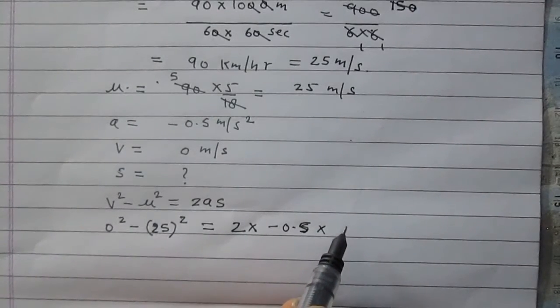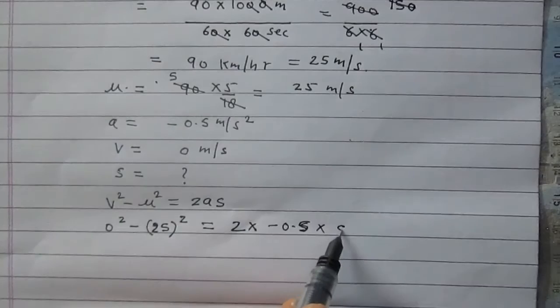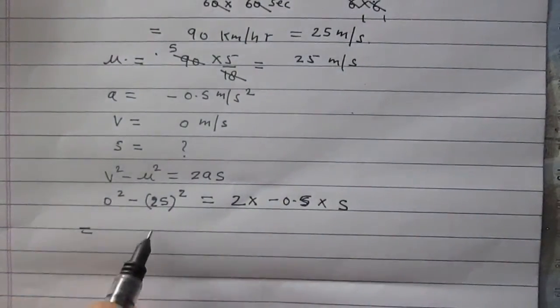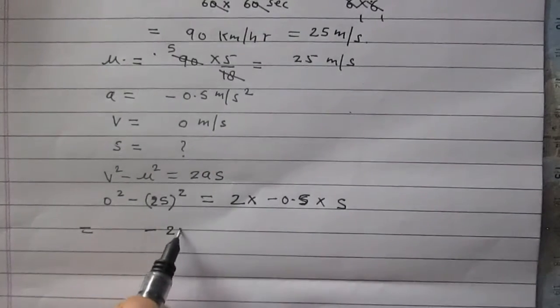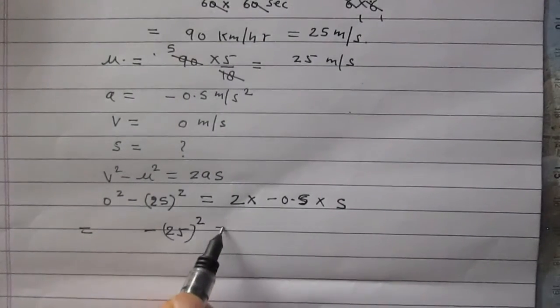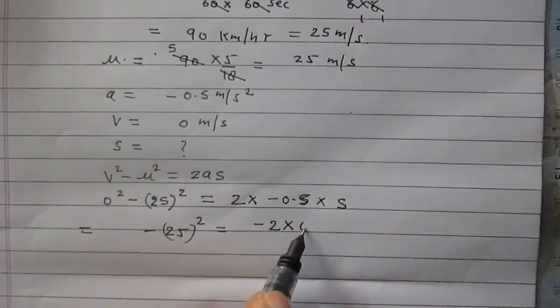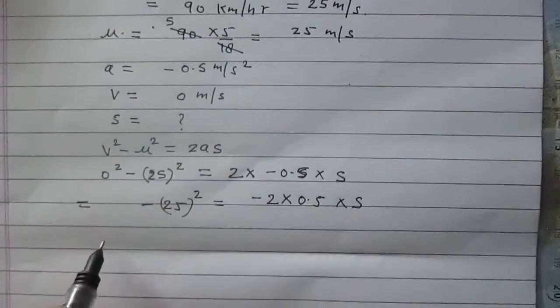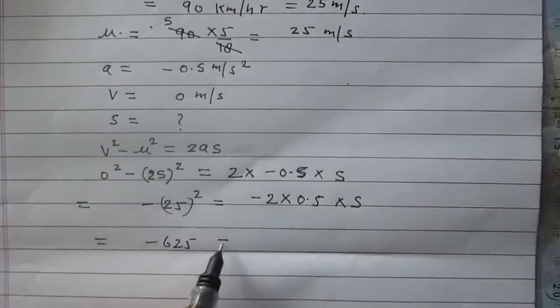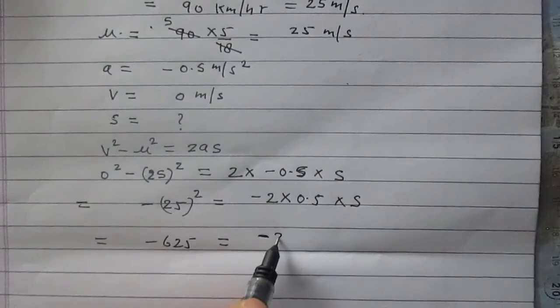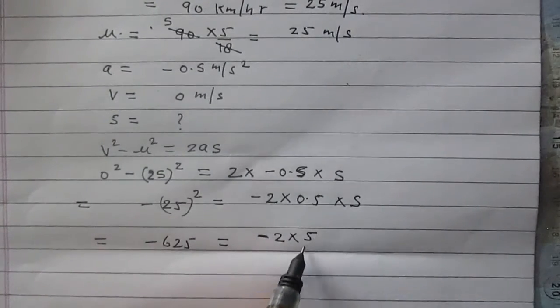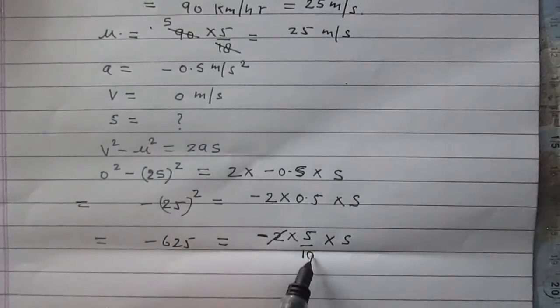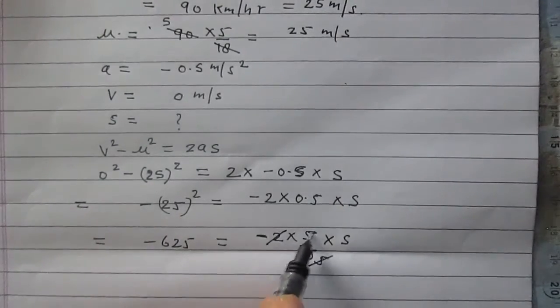On simplifying, you will get minus 25 square equals minus 2 in multiplication with 0.5, then s. It is -625 = -2 × 0.5 × s. You can consider 0.5 as 5 by 10. 2 × 5 is 10 and 5 tenths is 5, so -625 = -s.